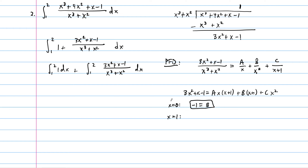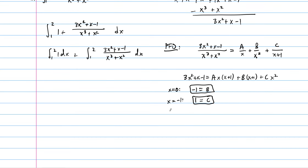Choosing x equals negative 1: the left side gives 3 minus 1 minus 1 equals 1, and only the C term survives, so C equals 1. Choosing x equals 1: the left side gives 3, and we get 2A minus 2 plus 1 equals 3, so 2A equals 4 and A equals 2.